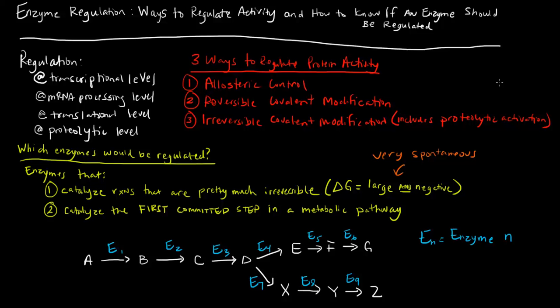The second thing is enzymes that catalyze the first committed step in a metabolic pathway. The first committed step is the first step that commits to a particular pathway. I've drawn out this idea here to represent what I'm talking about. If we think about A, B, C, D as being substrates and products of particular reactions—for instance, A to B is catalyzed by enzyme 1, B to C by enzyme 2, and so on.